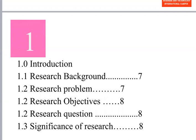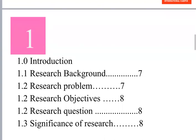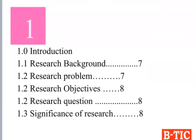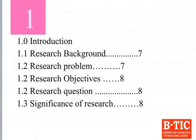The first area is the introduction, where you talk about the research background, research problem, research objectives, research questions, and the significance of research. Every organization and individual has multiple problems. The significance is about which problem you prioritize — how significant, how important, and how severe this problem is to be solved.